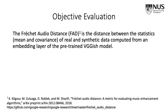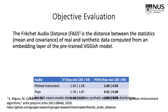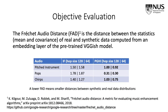To objectively evaluate the quality of the synthesized audio clips, we use Fréchet Audio Distance (FAD), a well-known evaluation metric that computes the distance between the statistics of the real and synthesized data distributions. A lower FAD value means smaller distances between synthetic and real data. Consistent with the subjective tests, PGHI-generated audio shows a smaller distance from the reference audio distribution compared to that generated by the IF method.